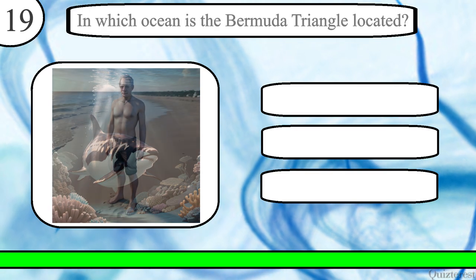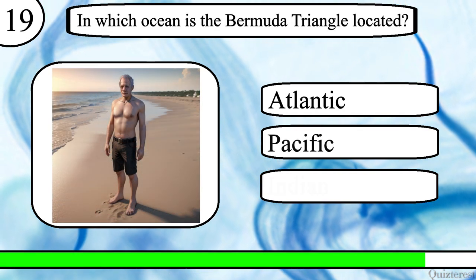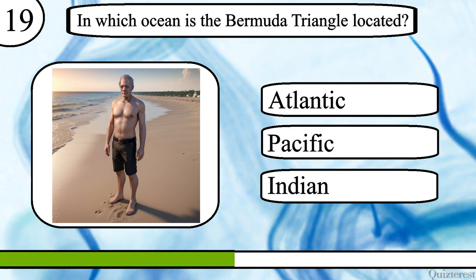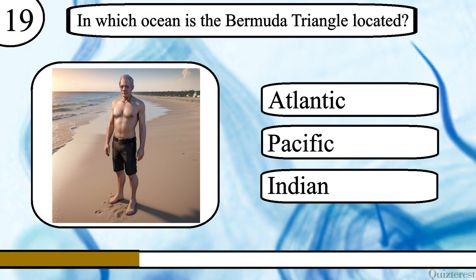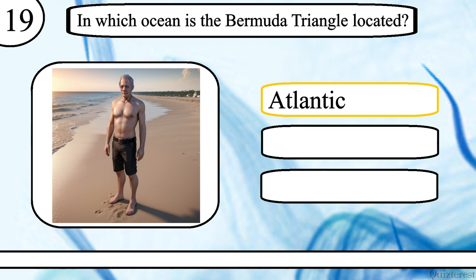Question 19. In which ocean is the Bermuda Triangle located? Atlantic, Pacific or Indian? The correct answer is Atlantic.